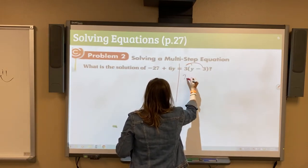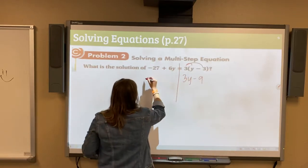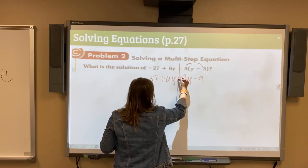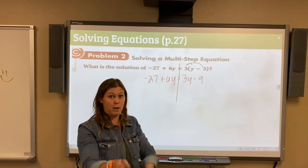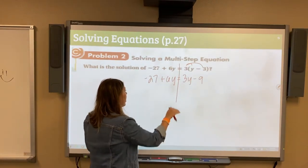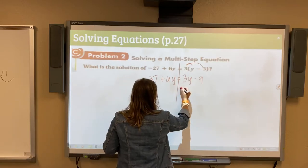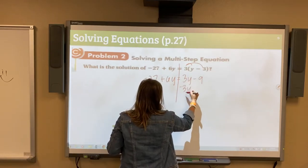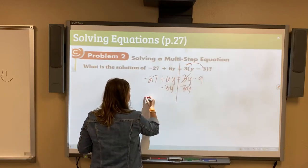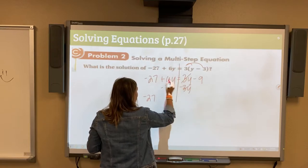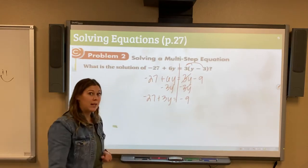Distribute our 3 to make 3Y minus 9. 3 times Y is 3Y. 3 times negative 3 is negative 9. So negative 27 plus 6Y equals that. Now each side is as simplified as possible. Now move variables to one side, numbers to the other. There's four different ways that you can start this. I like to move my variables to the left, so I'm going to undo this by subtracting 3Y. I have to subtract it from the 6Y because these are like terms. Bring down negative 27. 6Y minus 3Y is a positive 3Y equals negative 9. Make sure you bring down that negative 9.